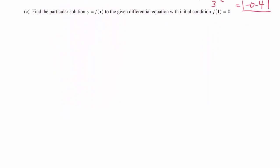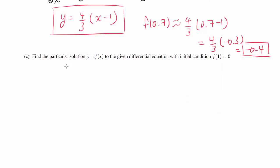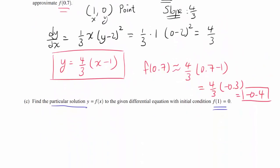So let's go on to part C. And it's the final part. Find the particular solution - so not the general solution - y = f(x) to the given differential equation with initial condition f(1) = 0. So we have our differential equation: (1/3)x(y-2)². And we have this initial condition. So let's start by finding the general solution. Once we find the general solution, we can find the particular solution using this initial condition.